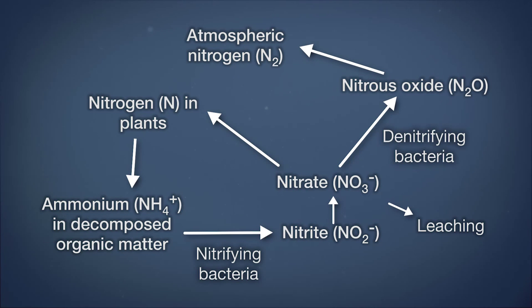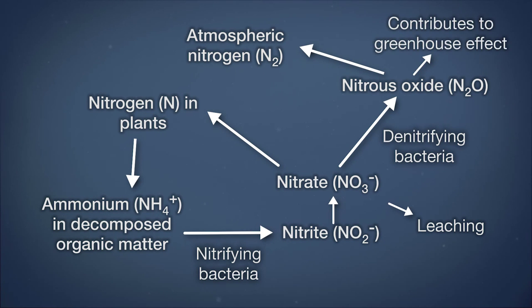However, if that N2O hangs around and does not get converted back to N2 gas, it will work its way up into the atmosphere where it is a greenhouse gas. Nitrous oxide is a potent greenhouse gas. So those are some of the nuances, and each one of those conditions, each one of those changes might occur or might not occur depending on temperature, moisture, and all sorts of factors.